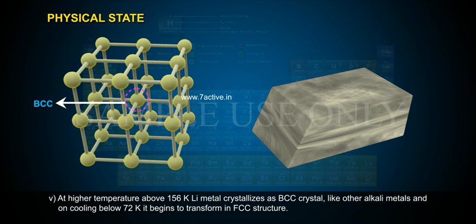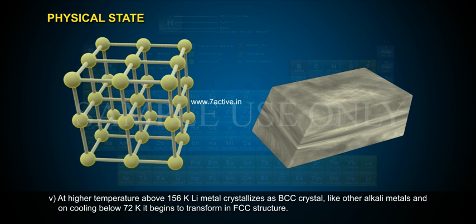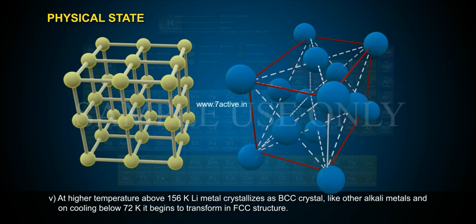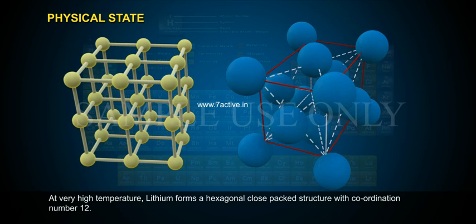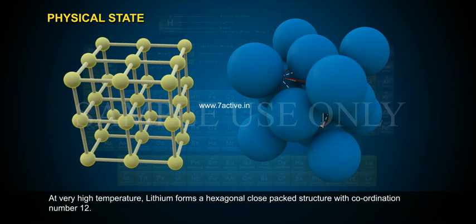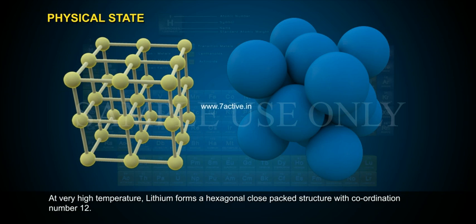5. At higher temperature, above 156 Kelvin, Li metal crystallizes as a BCC crystal like other alkali metals, and on cooling below 72 Kelvin, it begins to transform into an FCC structure. 6. At very high temperature, lithium forms a hexagonal close-packed structure with a coordination number of 12.